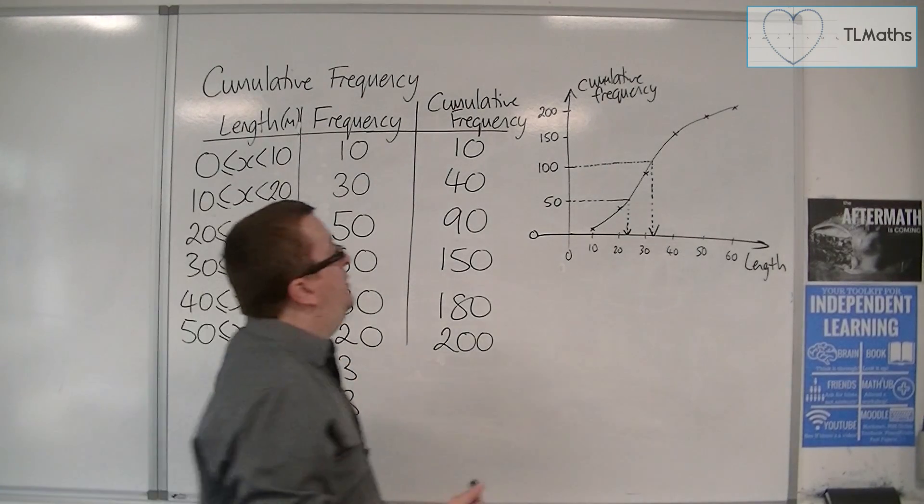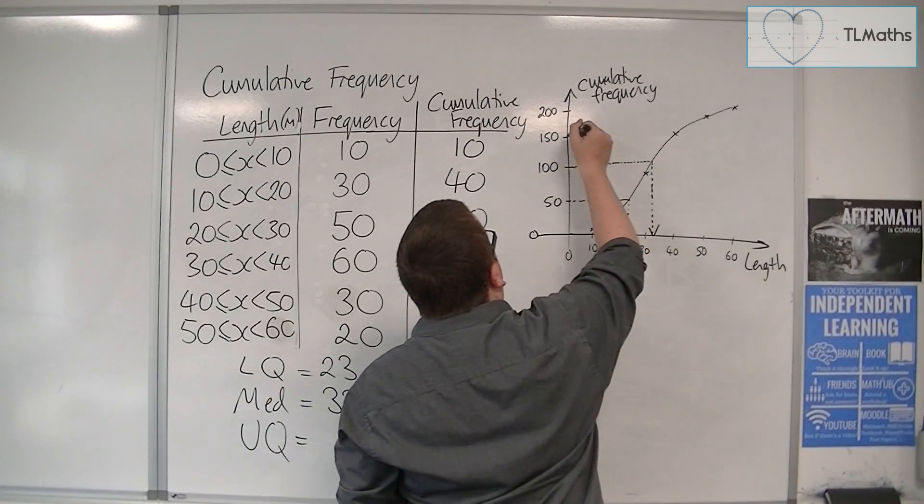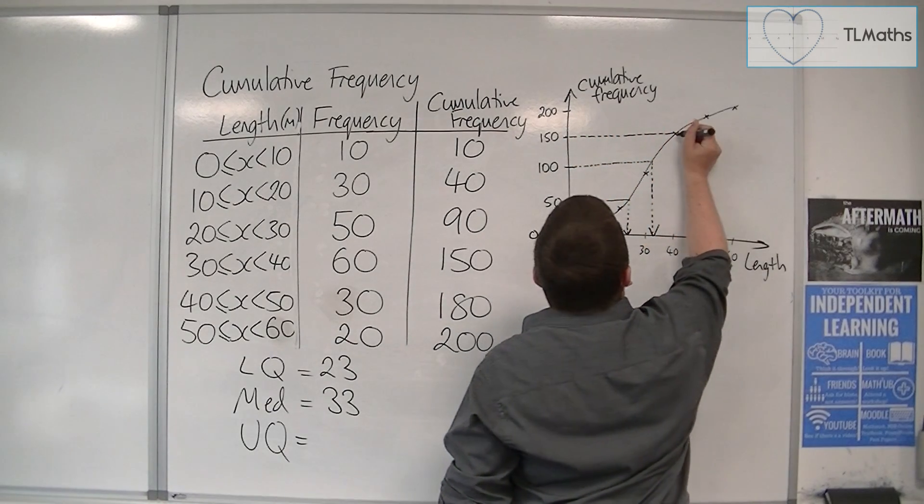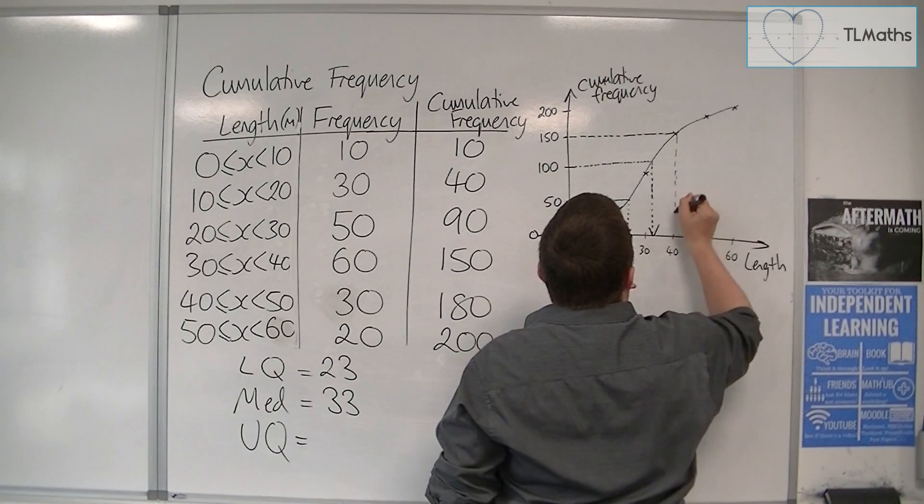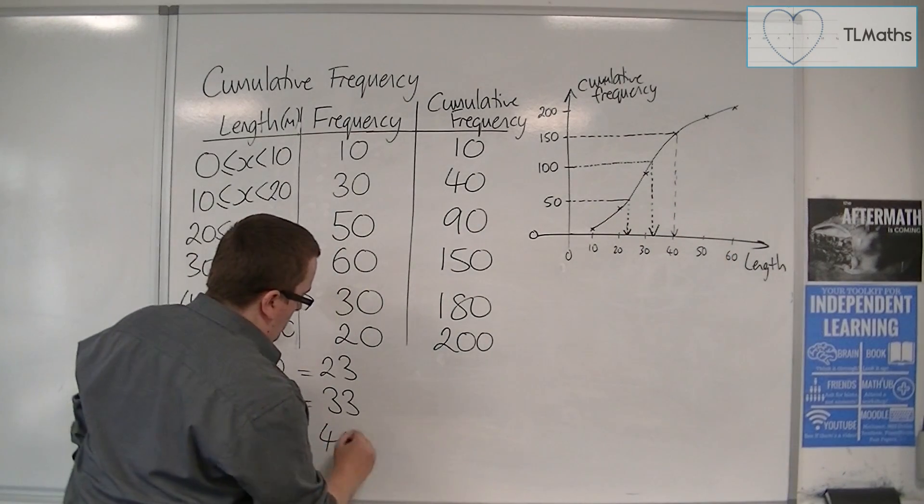And then the upper quartile, it would be at the 75%. So three quarters, 150. Straight along. And then down, I've got about 40.